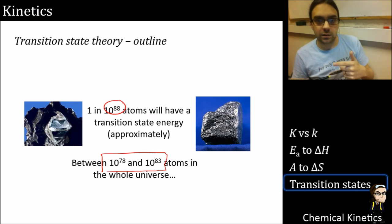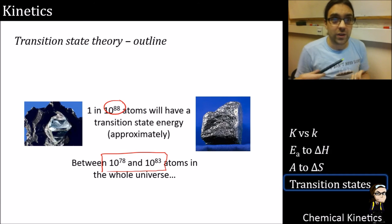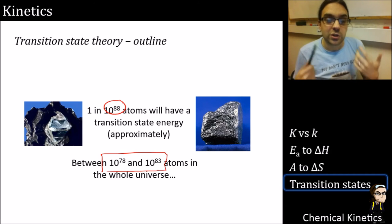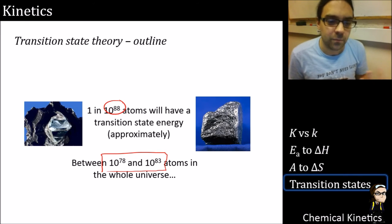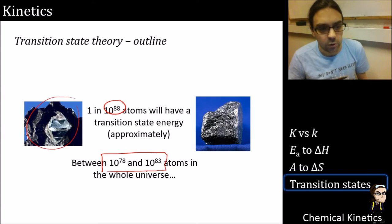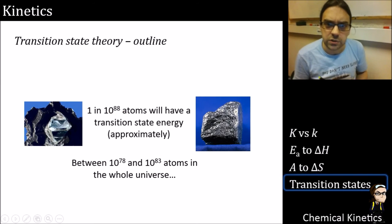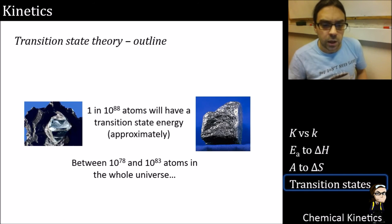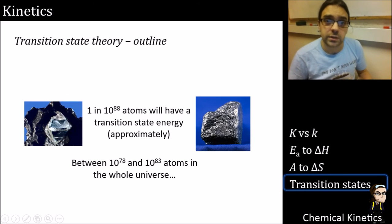About 1 in 10⁸⁸ atoms will be at the transition state - and to put that in perspective, 10⁸⁸ is the estimated number of atoms in the entire universe. So if the entire universe were made of diamond, you still wouldn't find one carbon atom at its transition state. That's an impressive stability. This won't climb over the activation energy barrier spontaneously at room temperature.